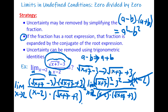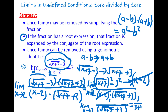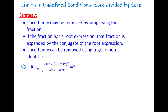Substituting x = 2 gives 1 divided by (√9 + 3) = 1 divided by (3 + 3) = 1/6. The answer is 1/6. In this question we used the second strategy — multiplying by the conjugate.